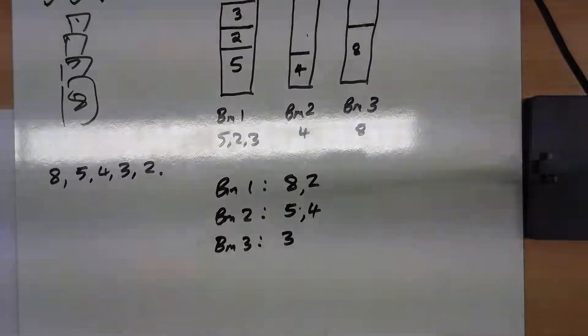Part D says, if each bin could only hold 8, is it possible to still pack the boxes into three bins?